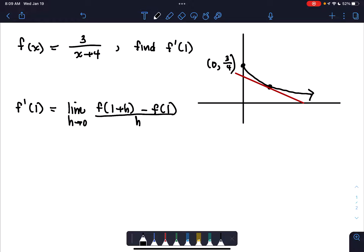All right, so in this video, what we're going to look at is finding the instantaneous rate of change of the function f(x) equals 3 over x plus 4 at x equals 1.